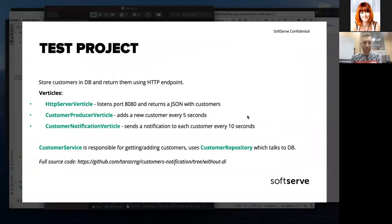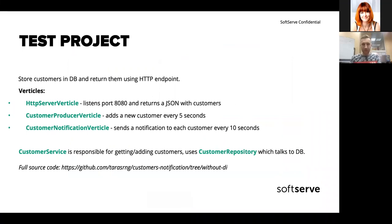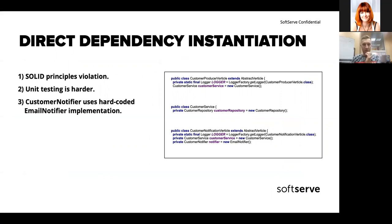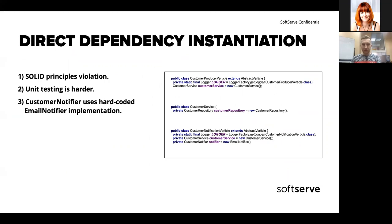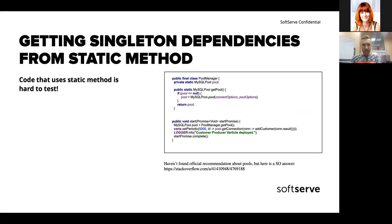You've probably already spotted some problems with this project. First, this code violates SOLID principles because the Verticle is not only responsible for business logic but also for creating its own dependencies. That makes unit testing harder. The customer notifier even decides which implementation it needs — so if you have a lot of those hard-coded values, to switch everything you'd have to go into every class and refactor it. It's not flexible.